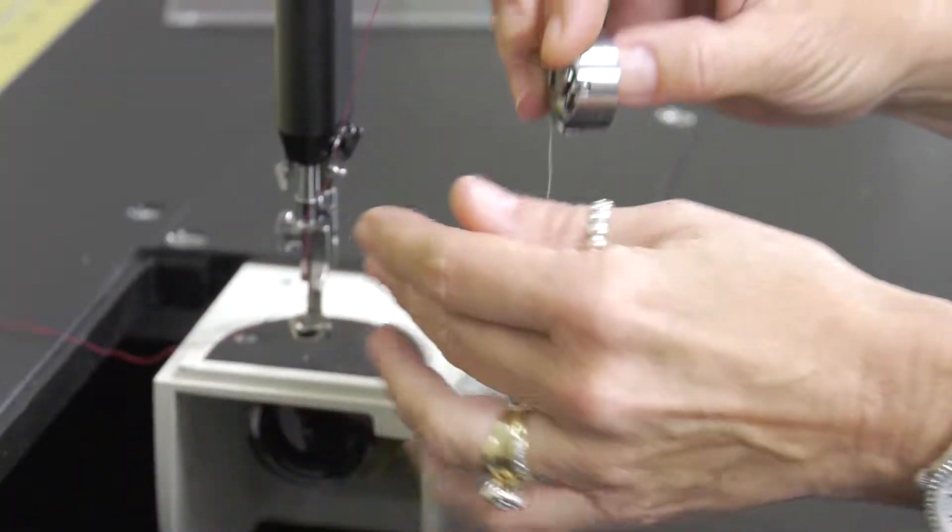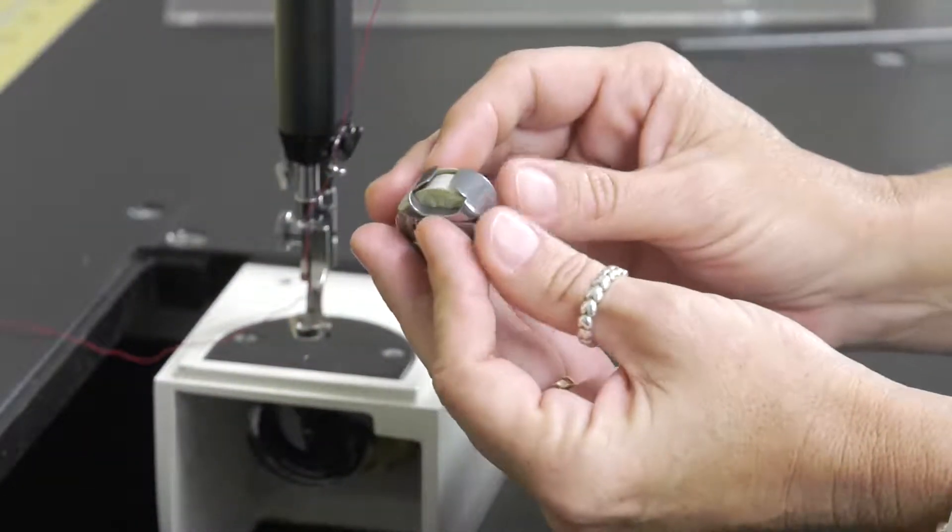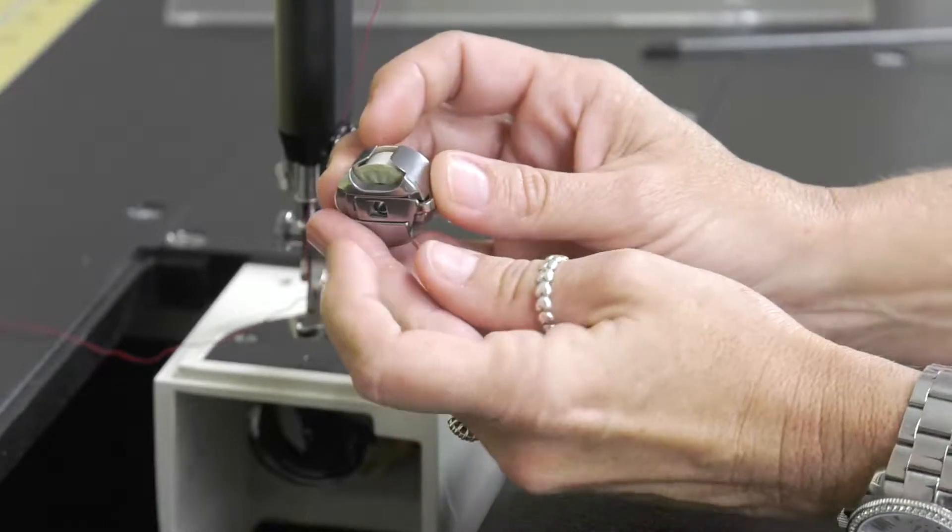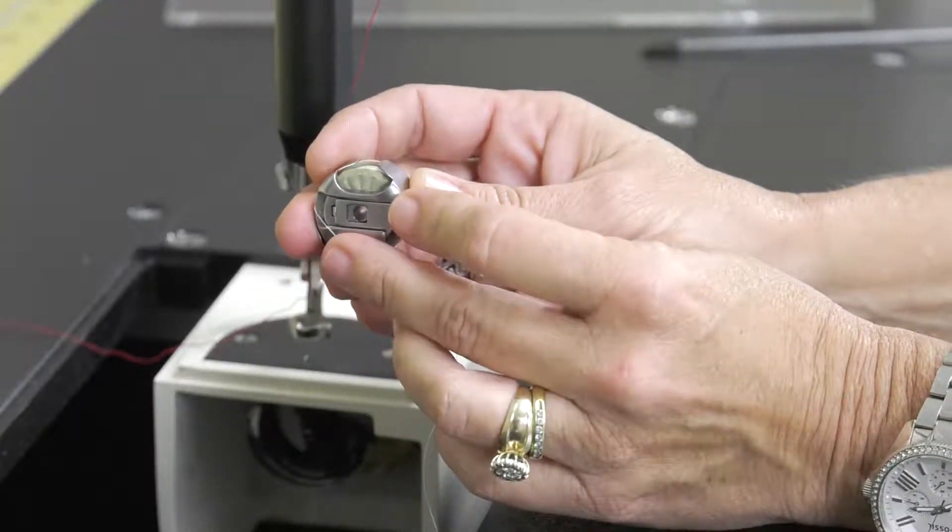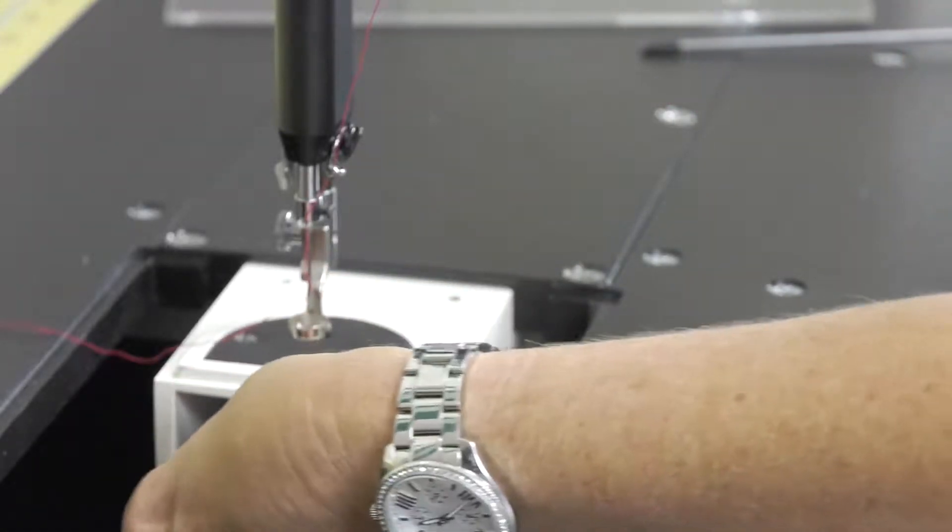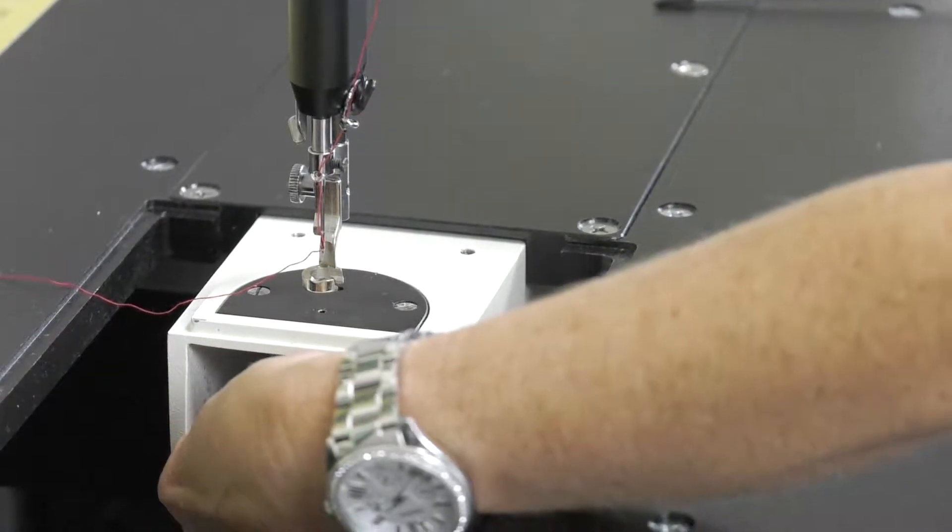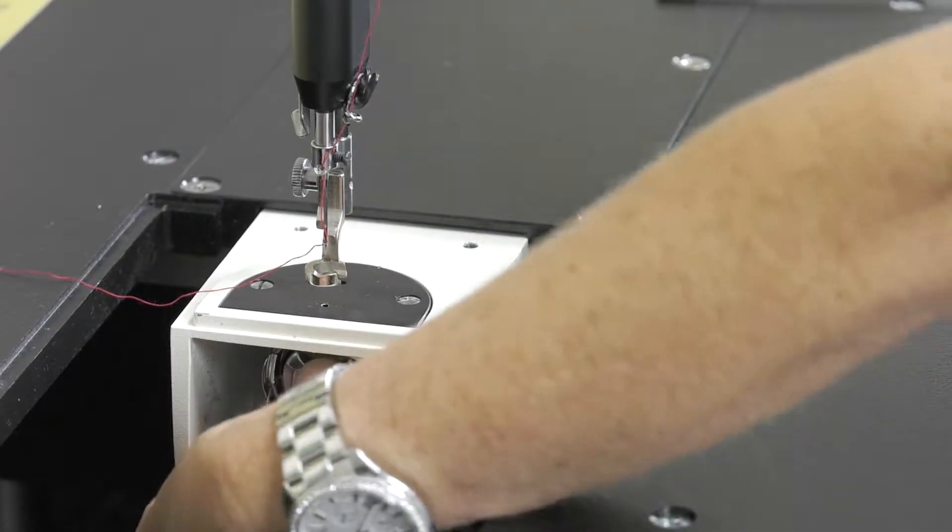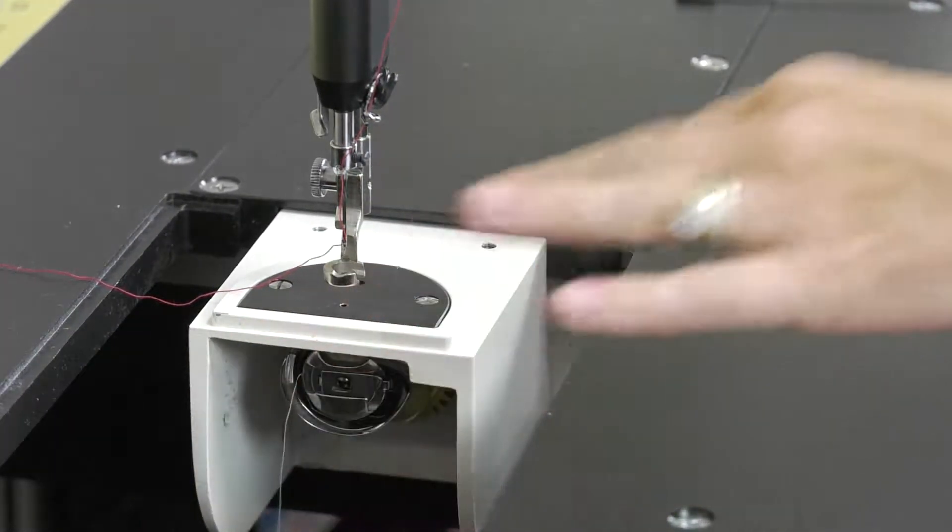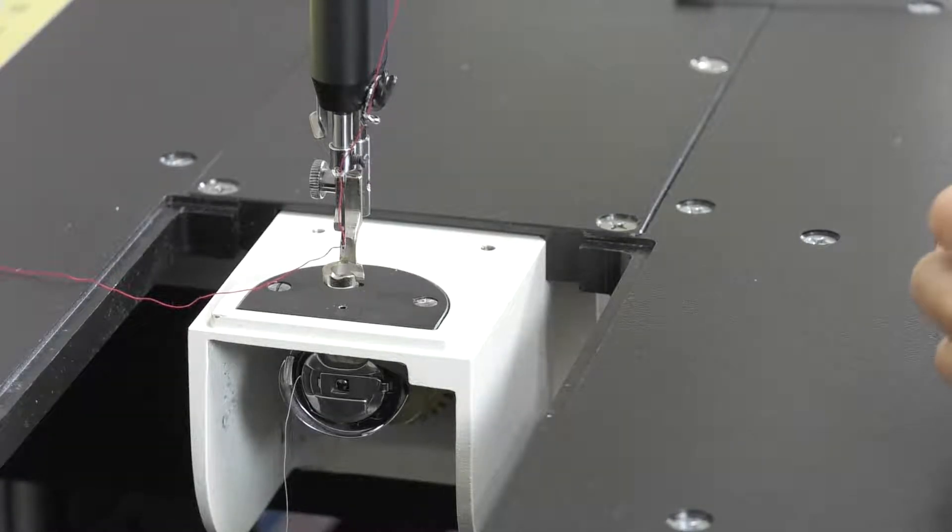To put the bobbin back in the bobbin case, I'm going to turn it around, the opening's at the top. We do not need to open up this lever. We're going to simply hold the bobbin in our hands, keeping the opening at the top, insert it, push with your thumb or finger until it clicks. Once you hear that click, you know the bobbin is inserted properly.